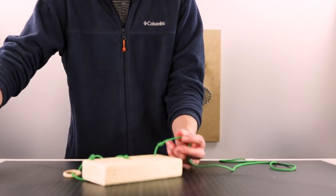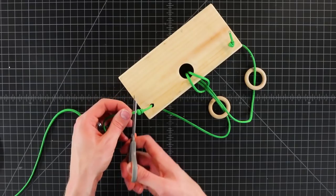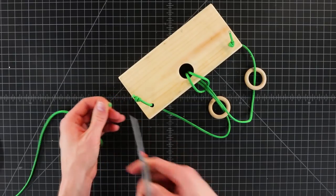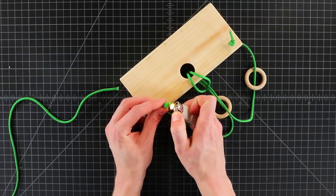Alright. Now we're going to trim our ends. Like usual, just cut it about a quarter inch from the knot. Melt it and flatten it.